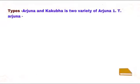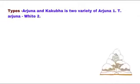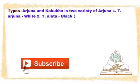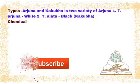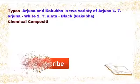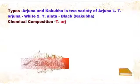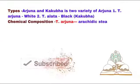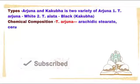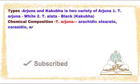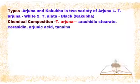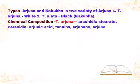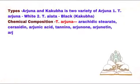First variety: Terminalia Arjuna – is white (Shweta Arjuna). Second variety: Terminalia Alata – is black (Krishna Arjuna), also known as Kakuba.